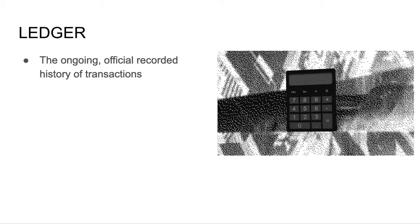The ledger is the ongoing official recorded history of transactions. The ledger is updated one layer at a time. Once there is agreement about the validity of all blocks in a layer, the transactions from all blocks are added to the ledger.